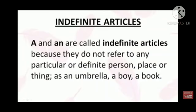A and AN are called indefinite articles because they do not refer to any particular or definite person, place, or thing. For example, 'an umbrella' — it may be any umbrella; 'a book,' 'a boy.'